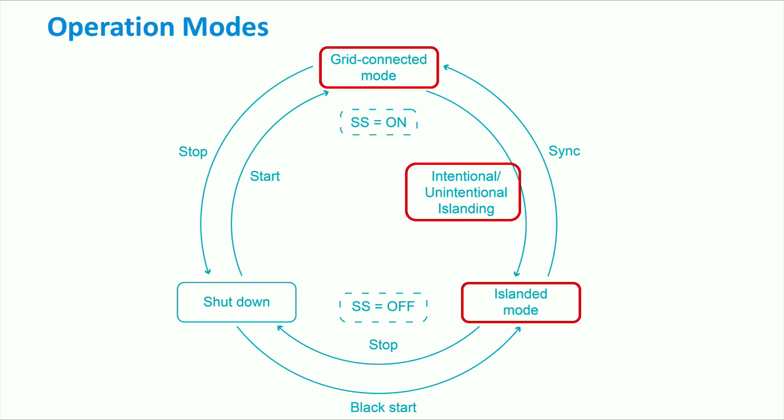To achieve a seamless transfer from grid connected to islanded mode, it is required to reduce the active and reactive power change of the main grid to zero. Then, a voltage source-based grid supporting unit changes its mode in order to control both voltage and frequency following the disconnection from the main grid. On the other hand, the unintentional islanding occurs due to faults at the upstream network; in such conditions the microgrid controller immediately sends a signal to the grid supporting units to start controlling both voltage and frequency.